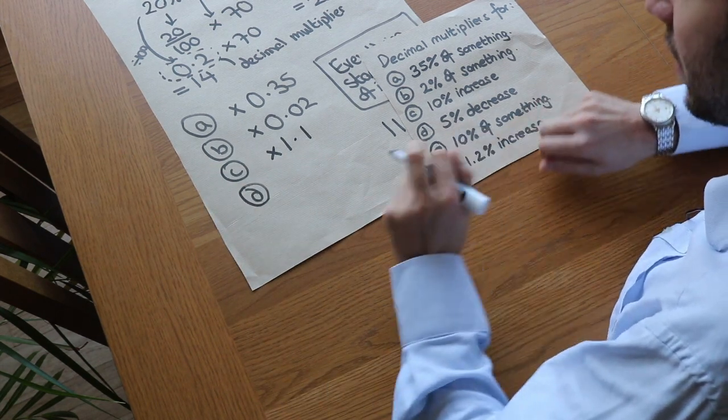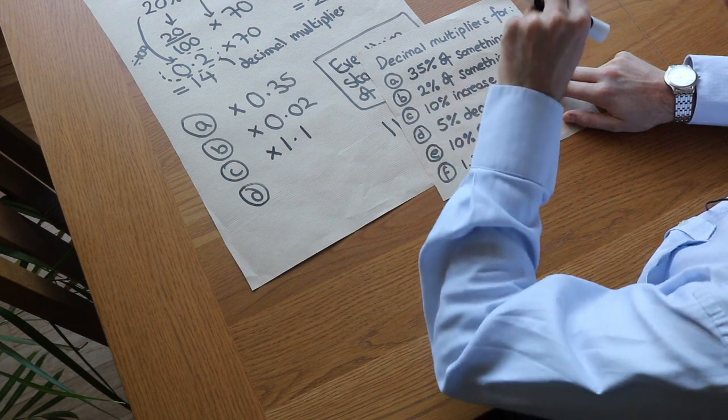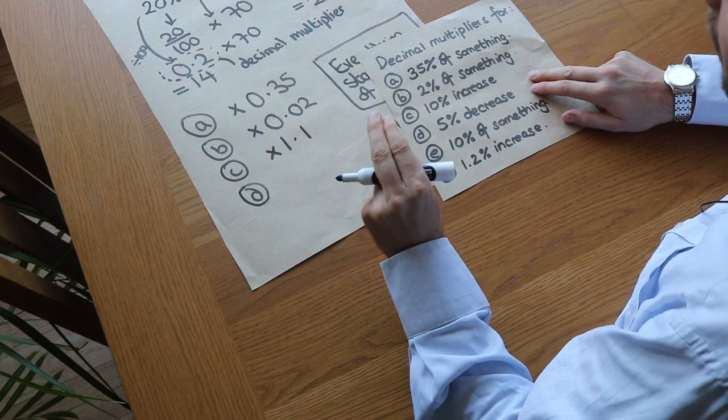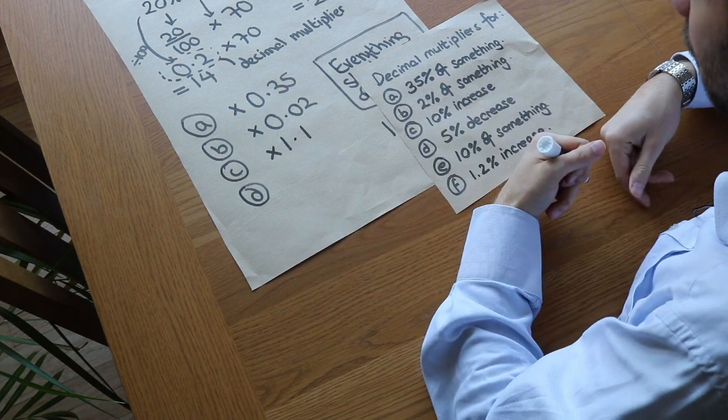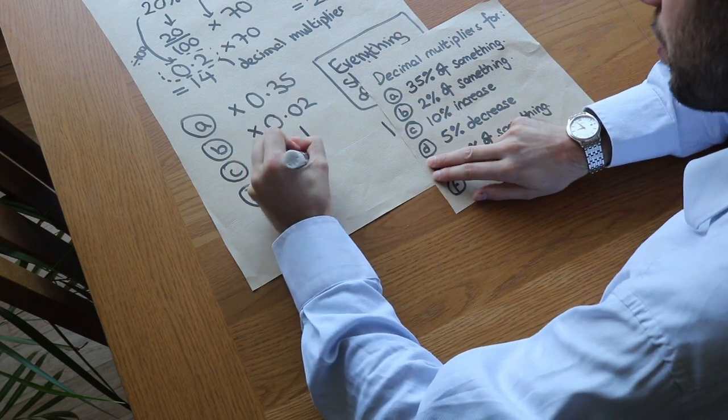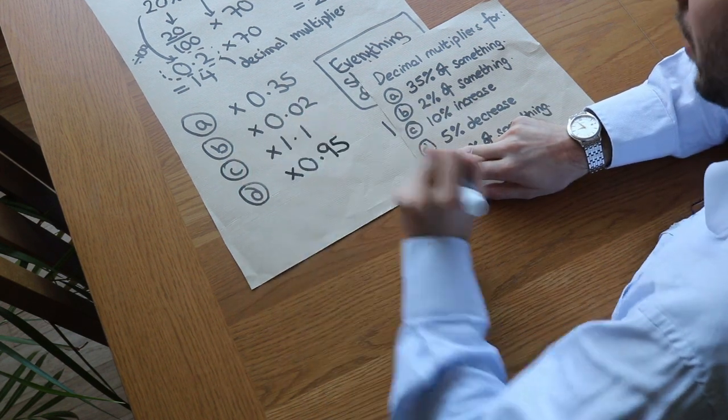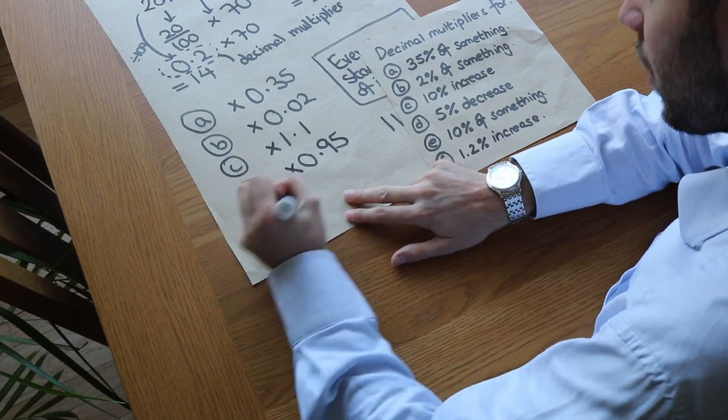What would be the decimal multiplier for a 5% decrease? It starts at 100%, reduces by 5%, and has now dropped to 95%. So we're effectively finding 95% of its value in order to find a 5% decrease. 95% as a decimal is 0.95, so we'd times by 0.95.